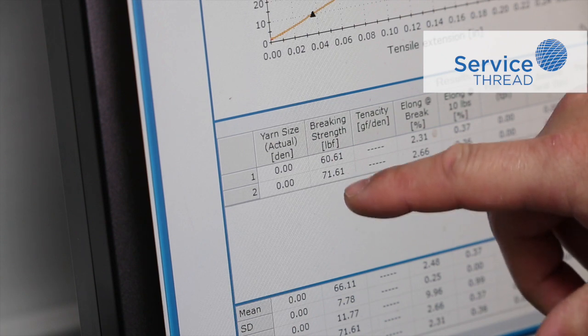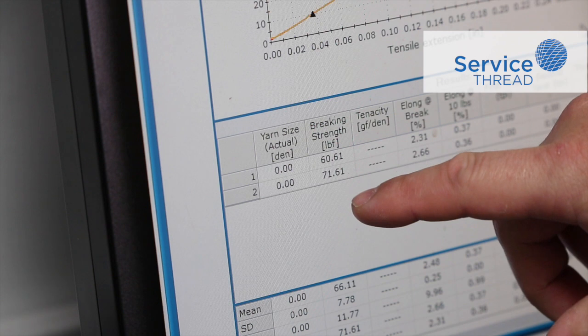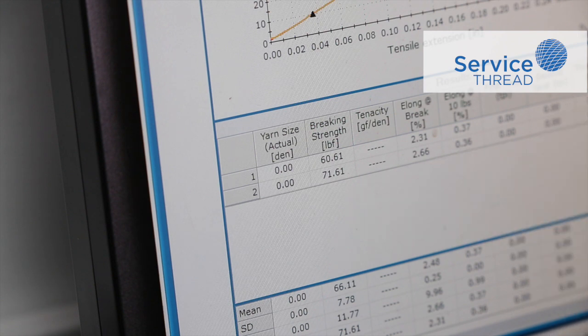The twisted yarn is a much more accurate representation of what the actual breaking strength of the material is, because the fibers broke as a bundle.